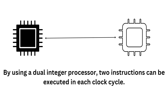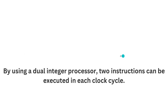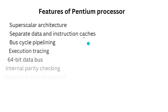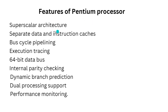Let's see some features of the Pentium processor. The Pentium processor has superscalar architecture, separate data and instruction caches, bus cycle pipelining, execution tracing, 64-bit data bus, internal parity checking, dynamic branch prediction, dual processing support, and performance monitoring.